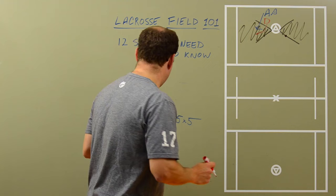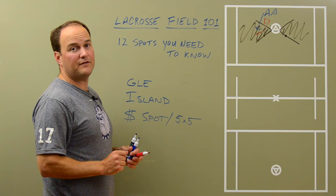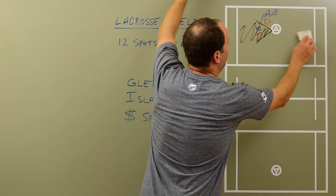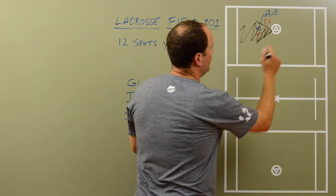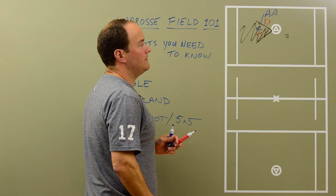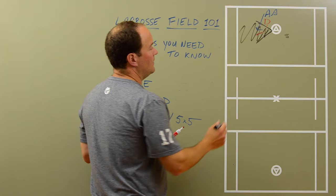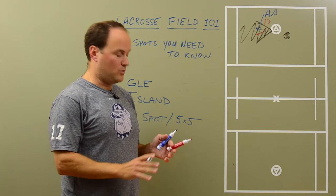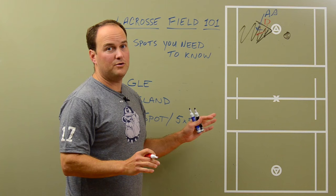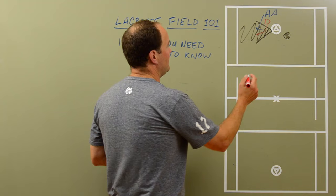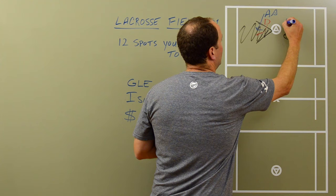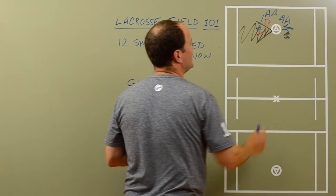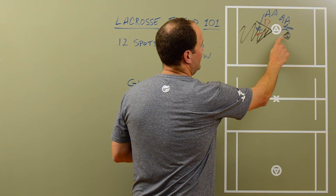The money spot — a lot of teams call it the five and five. We call it the money spot because this is where attackmen make their money. It's five yards above the goal line extended and five yards from the middle of the field. If attackmen can get to the money spot, this is where they're going to be able to do a lot of damage and get a lot of scoring opportunities. We'll talk about it in a separate video — dodges you can use to get to the money spot and dodges you can use once you're there. Once you get to the money spot, you know you've got a chance to score.